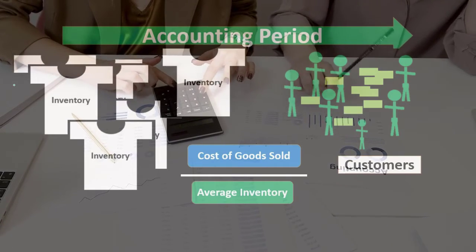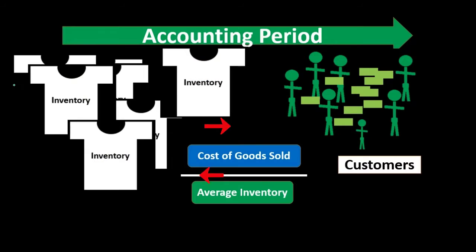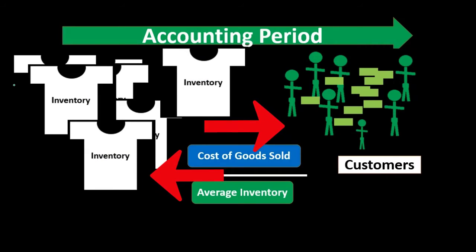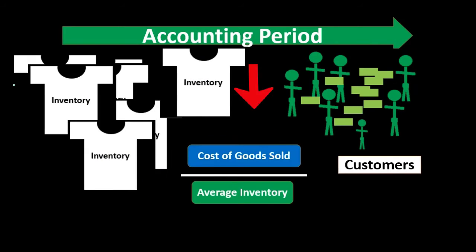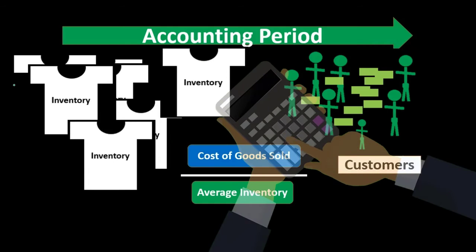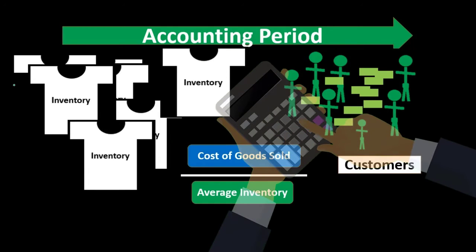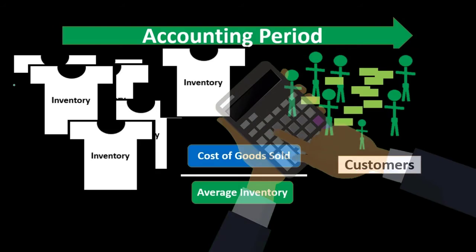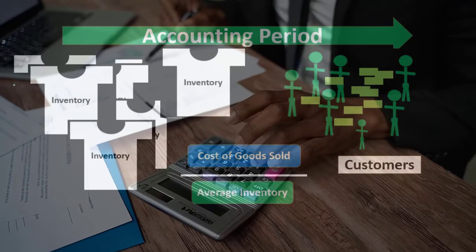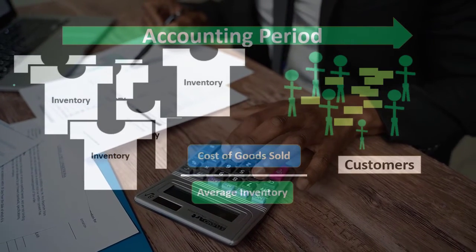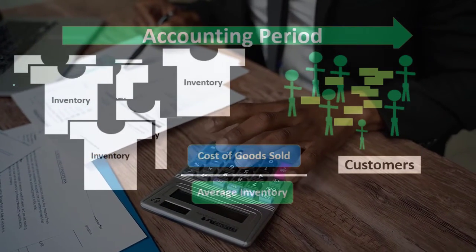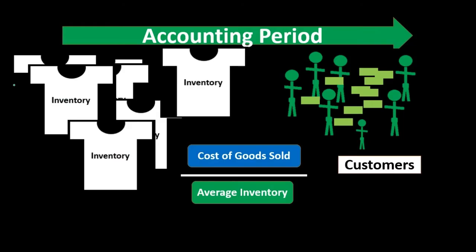So we're usually going to take the ending inventory and add it to the beginning inventory for the time period — which is equivalent to last period's ending inventory — and divide by two. The idea is that this gives us the average of what inventory should be at any given point during that particular time period.